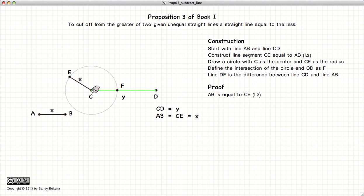Well, we know that AB is equal to EC because we use the methods in Proposition 2 to construct our line. We know that EC is equal to CF since it's the radius of the same circle.